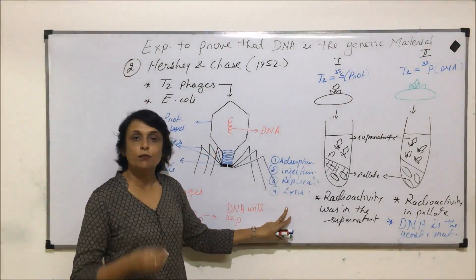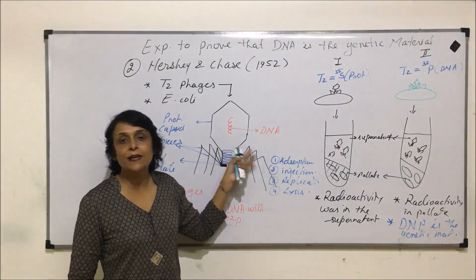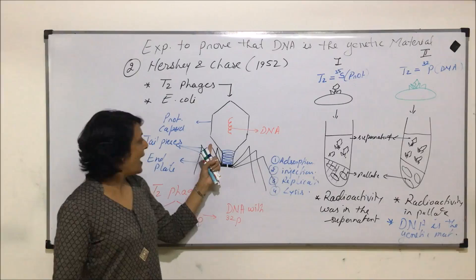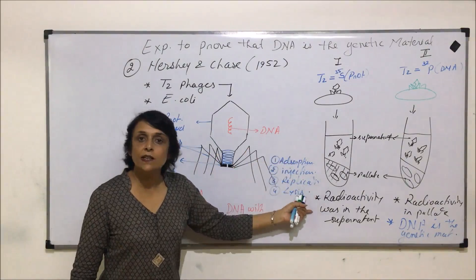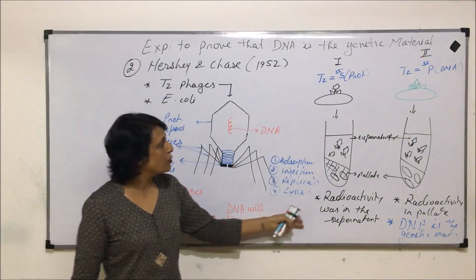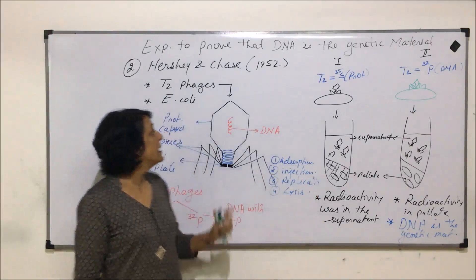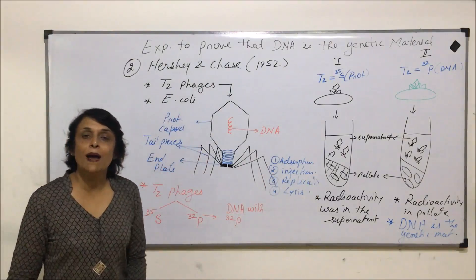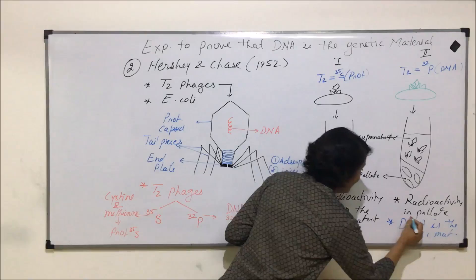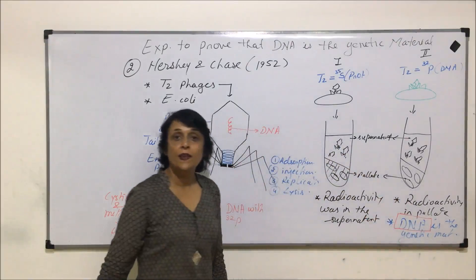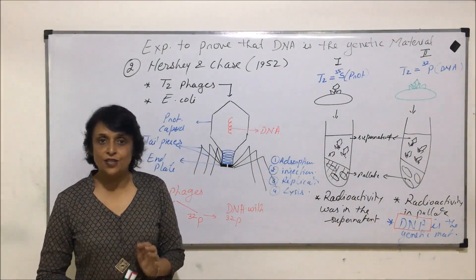Here, because we know the exact process of how the virus multiplies in its host cell — if it has to multiply, it has to inject its genetic material — and as it has only two things, protein and DNA, the DNA is injected. That means DNA is the genetic material. It was also tested using radioactive sulfur and phosphorus. This is the experiment done by Hershey and Chase which proves that DNA is the genetic material, and in most of the cells we find that DNA is the genetic material.